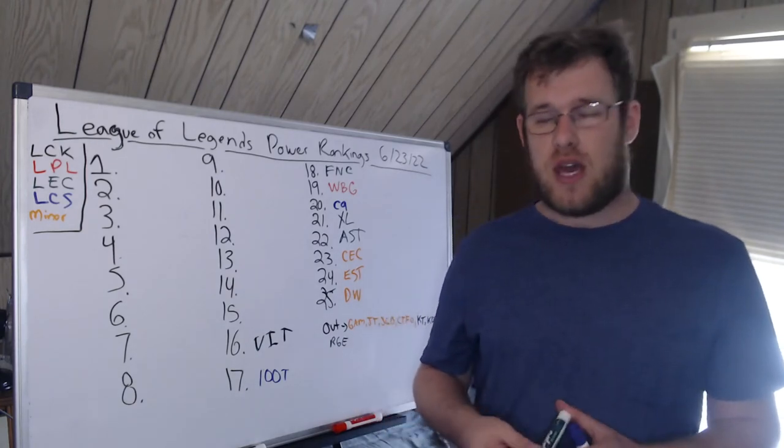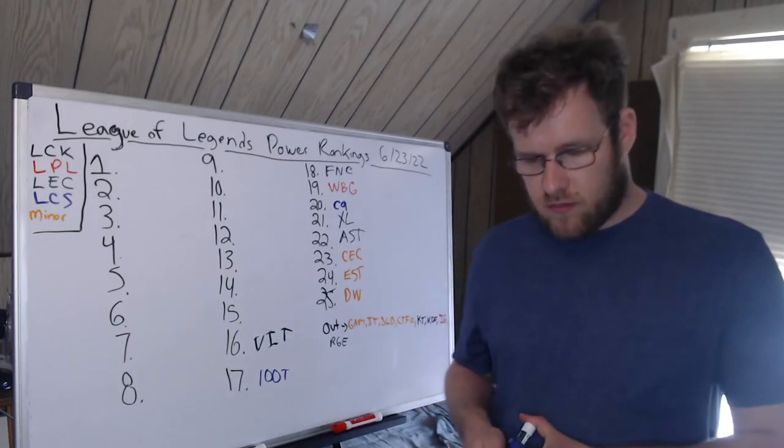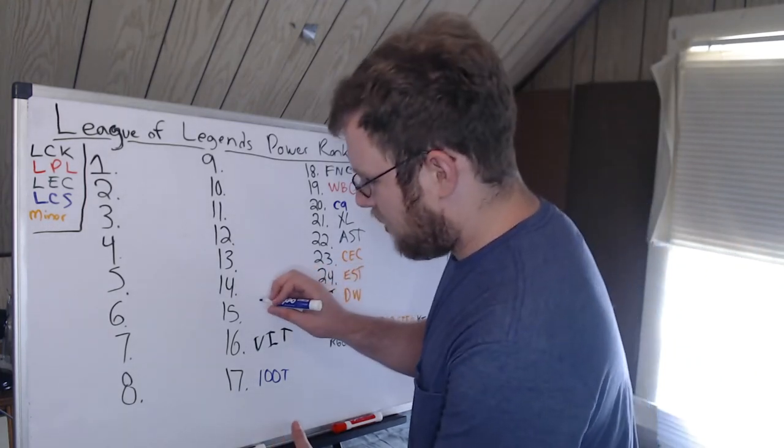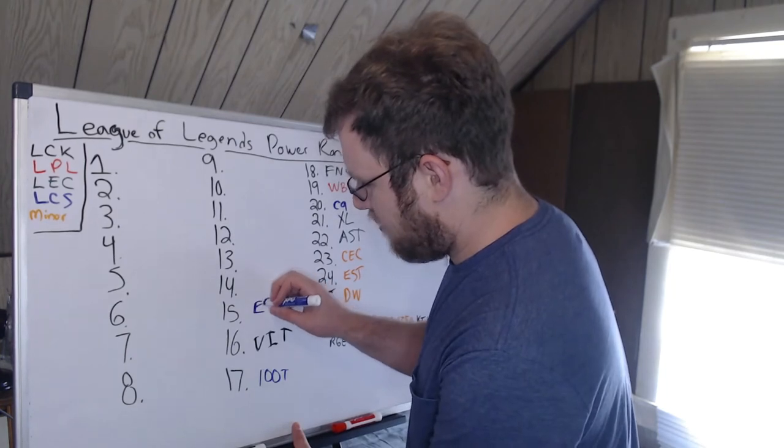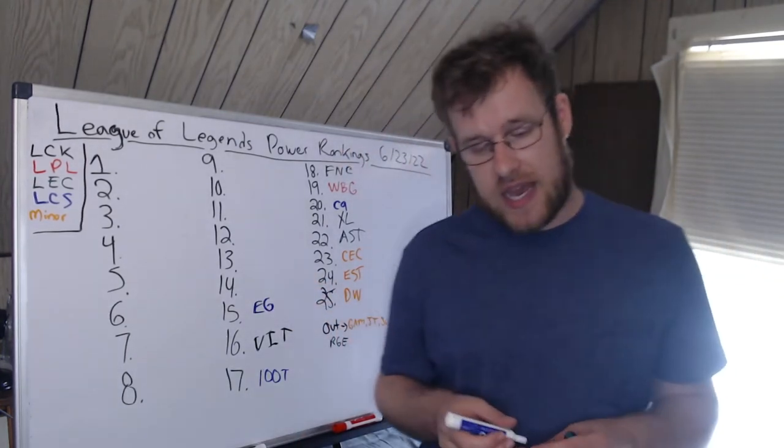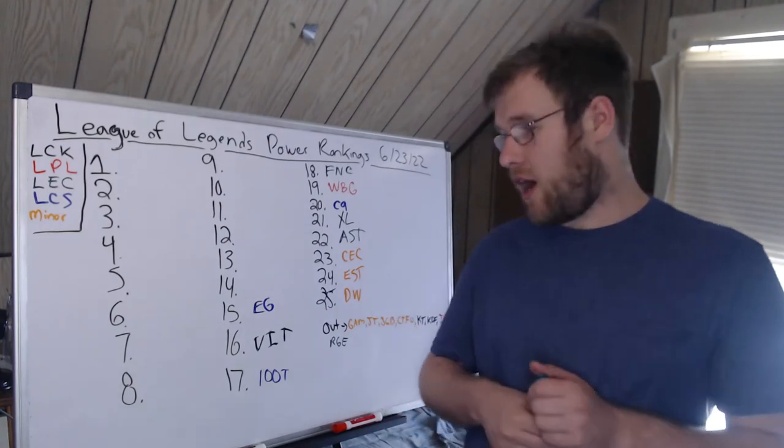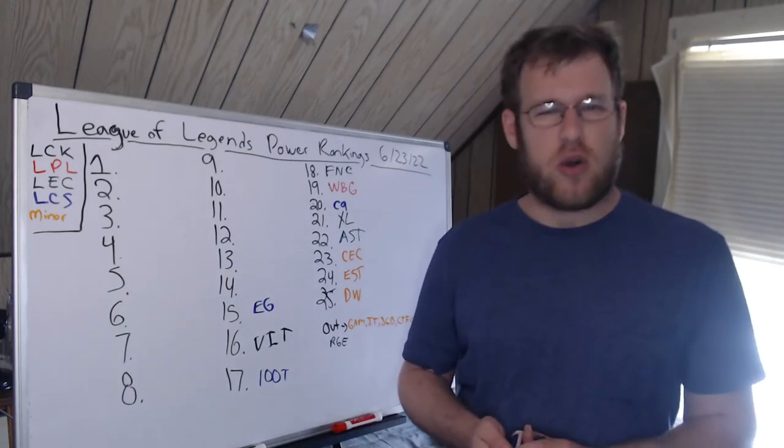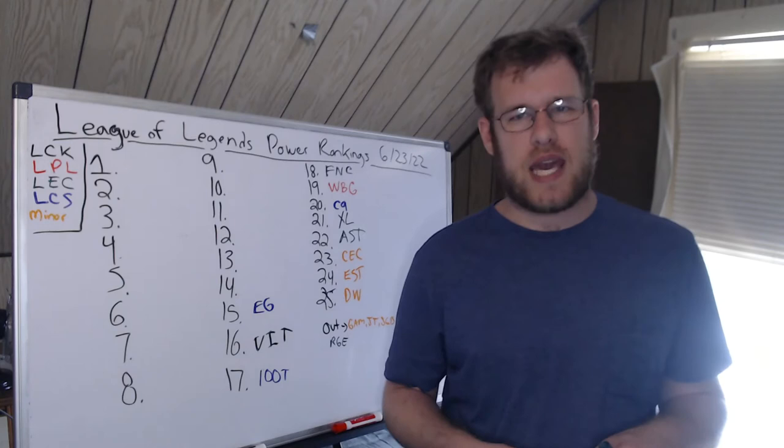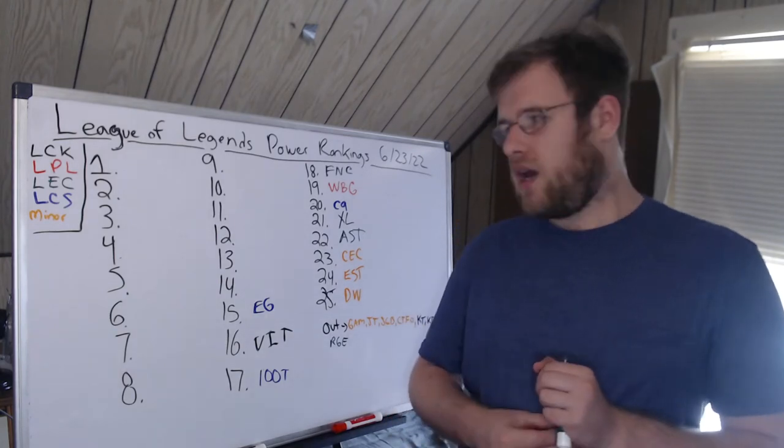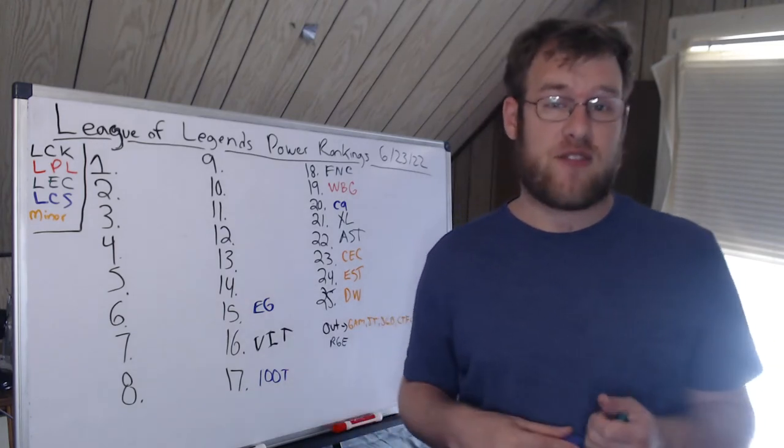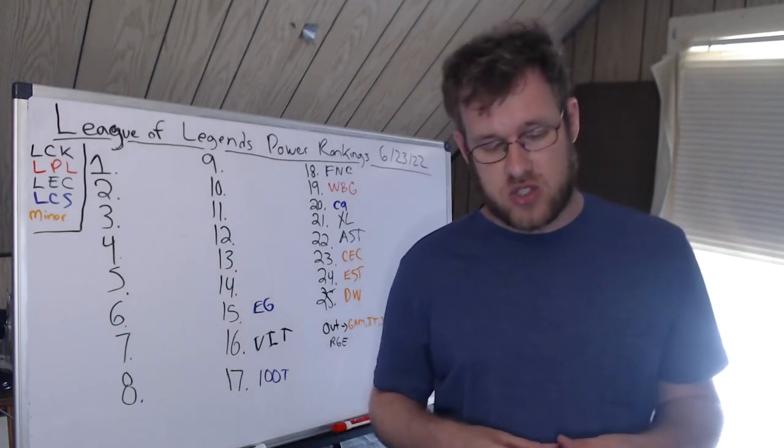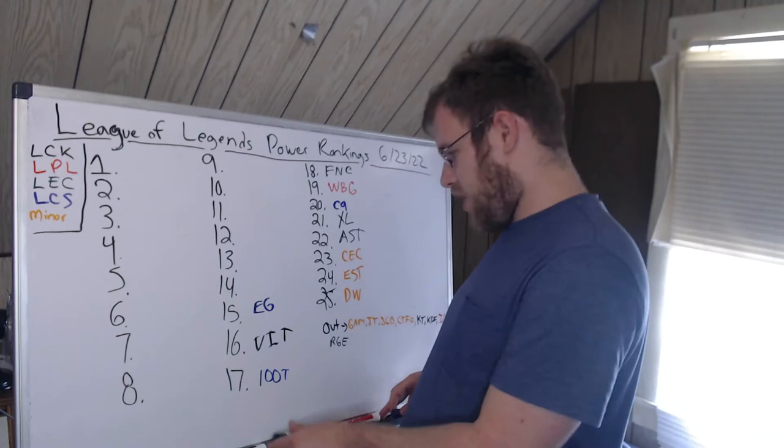15th, up eight spots, we have EG. EG, like we already went over, have beaten 100 Thieves and C9 as well as FlyQuest. Inspired has performed, Jojo I think was okay in a game, Danny looked really good in the game. Vulcan pulled out, I think, a Sona once, so I like to see that. Vulcan is definitely the weight that's holding this team back.